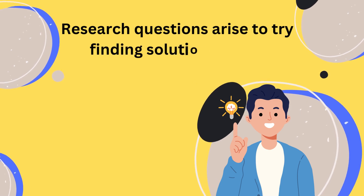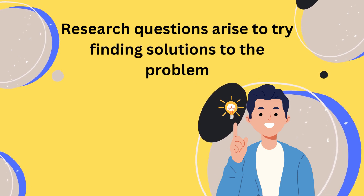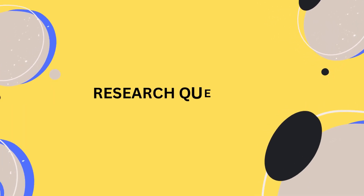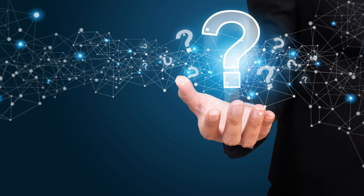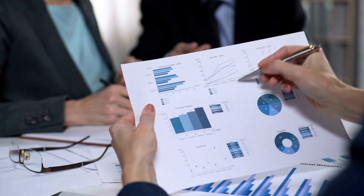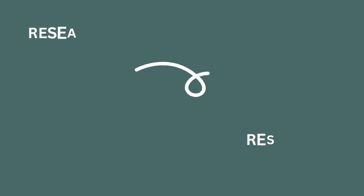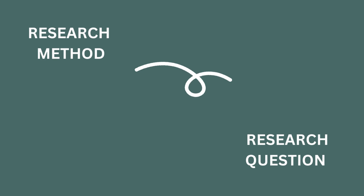Research questions arise to try finding solutions to the problem. So a researcher in this case would want to know why employees are leaving the company and how we can solve that issue. Therefore, the research question in this case becomes: what are the factors leading to employee attrition? Why are employees quitting? Research questions usually end with a question mark and start with the word why, how, what, and so on.